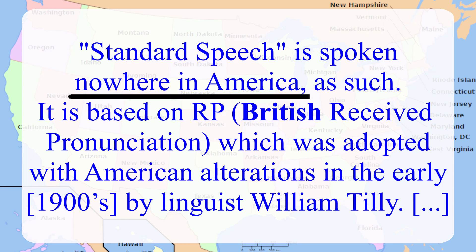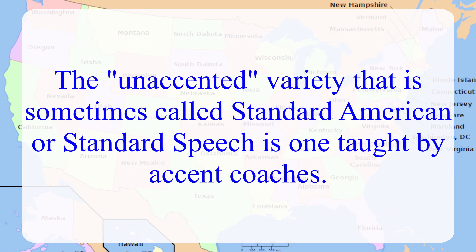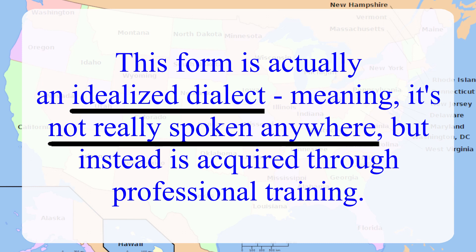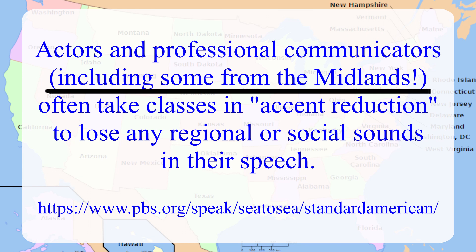Standard speech is spoken nowhere in America as such. It is based on RP, which is the British Received Pronunciation or proper British, which was adopted with American alterations in the early 1900s by linguist William Tilley. This authentic American sound was loosely based on the speech of the northeastern population of the US — spoken by the cultured, well-educated, well-traveled people of the time. Listen to old movies to hear it. The unaccented variety sometimes called Standard American or standard speech is one taught by accent coaches. This form is actually an idealized dialect, meaning that it's not really spoken anywhere, but instead is acquired through professional training. Actors and professional communicators, including some from the Midlands, often take classes in accent reduction to lose any regional or social sounds in their speech.